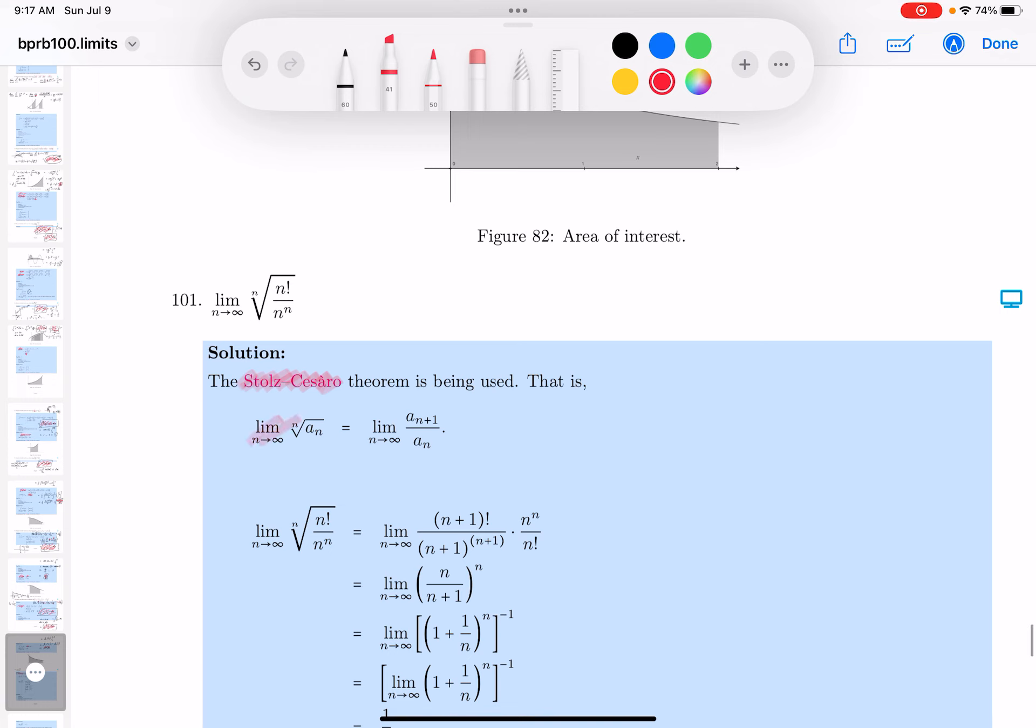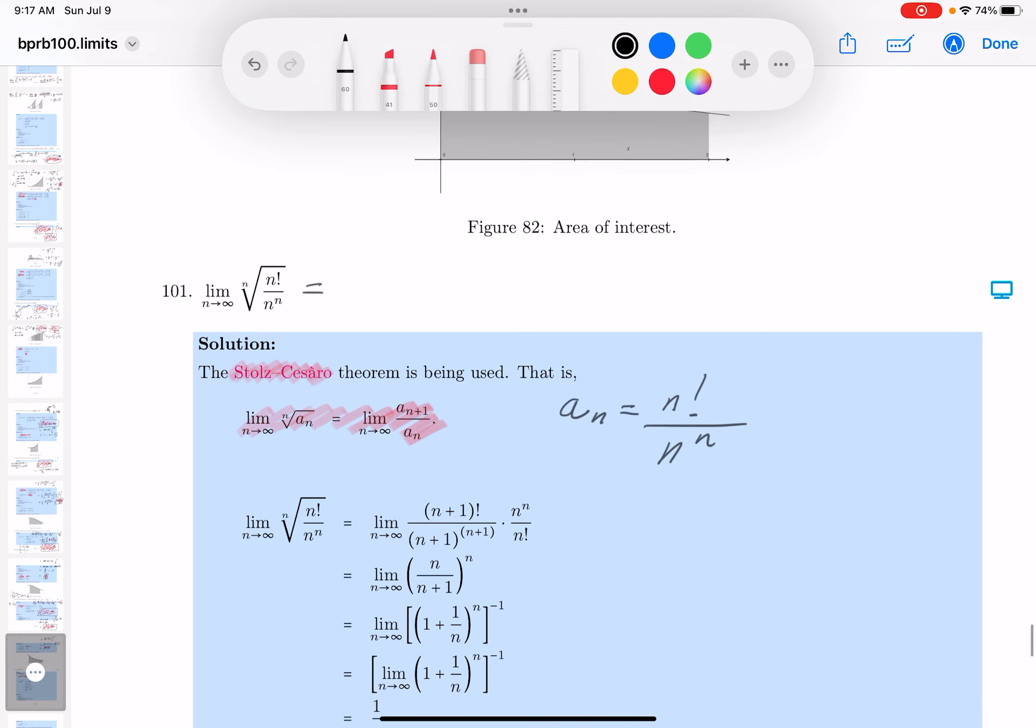But the interesting thing about this over here, on the Wikipedia page you'll see this over here. So I'm going to write down what AN is. And AN is going to be N factorial over N to the N. So what I want to do is write this without the root using this theorem. So we're going to get limit N goes to infinity.